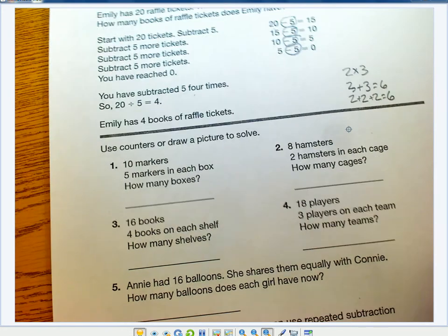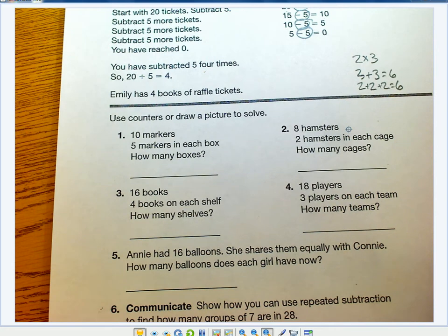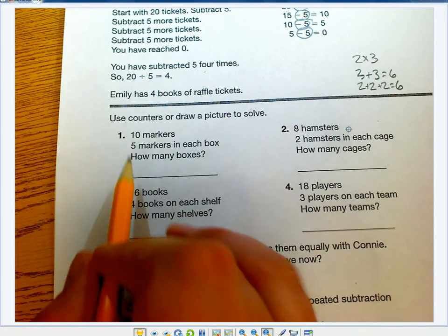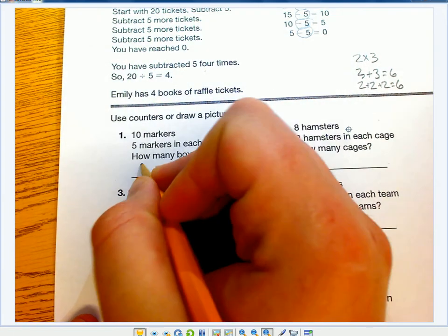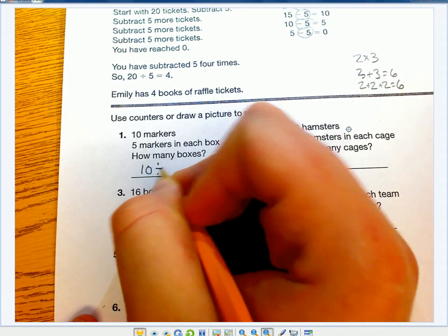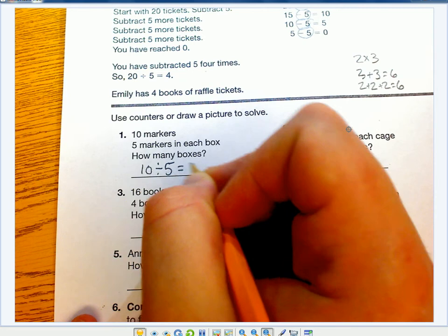Now for number 1, we're going to use repeated subtraction again. 10 markers, 5 markers in a box, how many boxes? That's going to be 10 divided by 5 equals what?